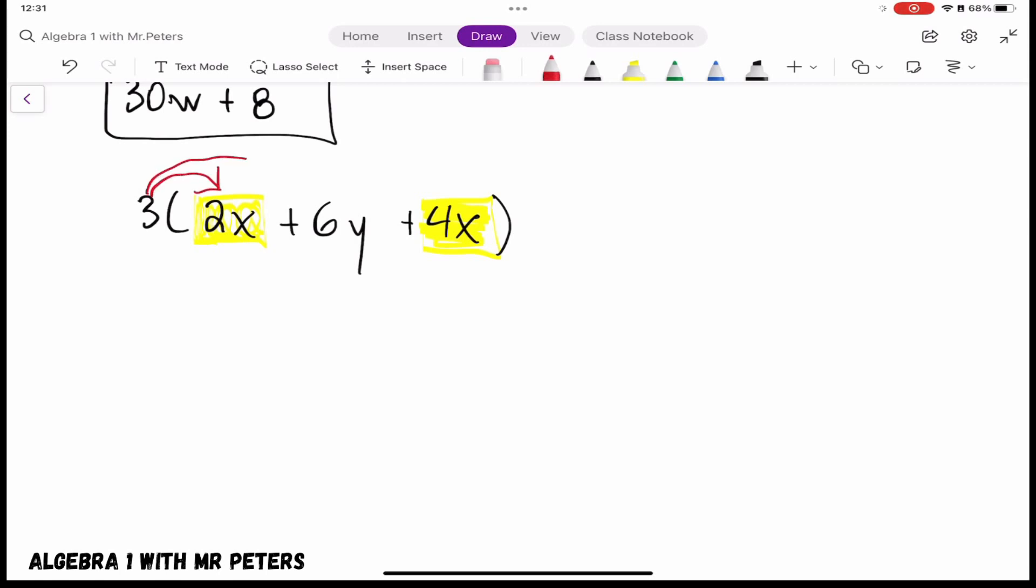So once I distribute, that will give me 3 times 2x plus 3 times 6y, and then we're also going to multiply 3 and positive 4x. Once we do this, our new expression will be 6x plus 18y plus 12x. Similar to the last problem, we have two terms that are like terms—they both have x's—so we can add them. Once we add them, our final answer should be 18x plus 18y.